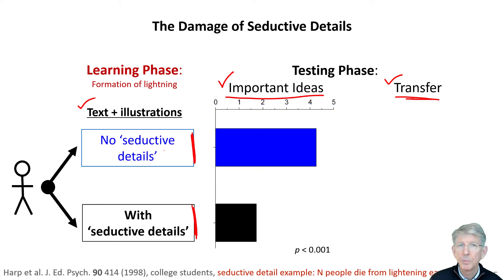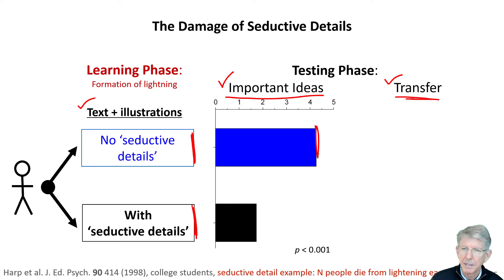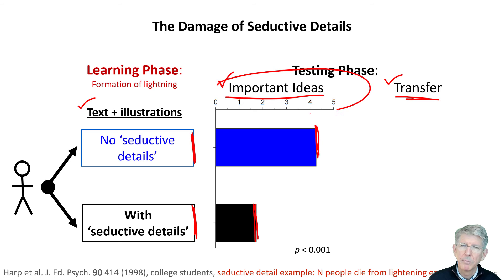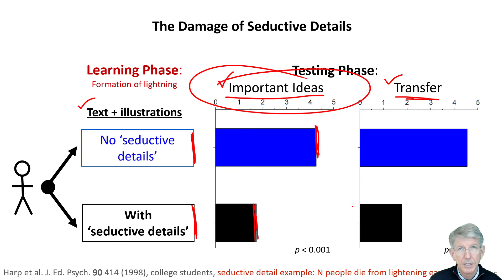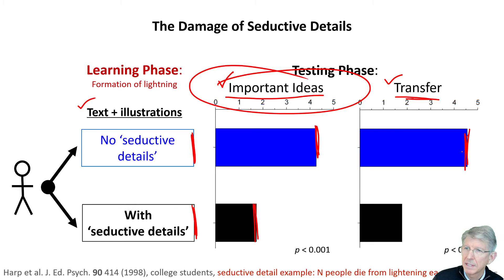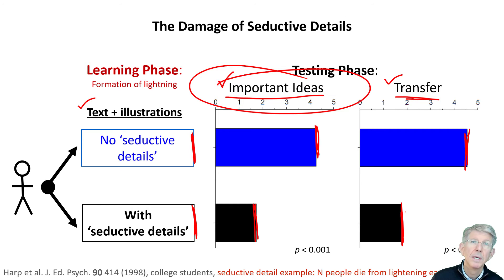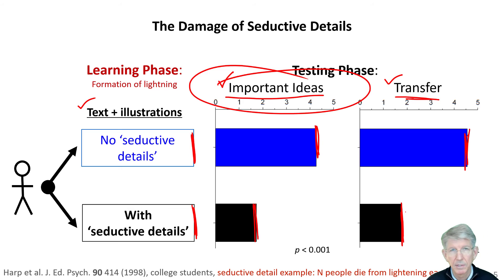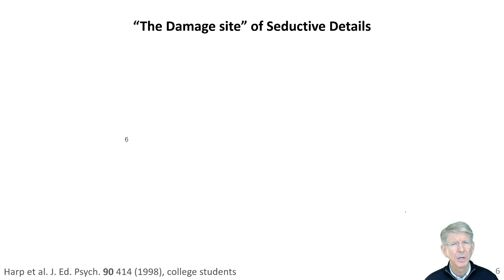The group that did not have any seductive details did distinctly better. Somehow, these seductive details are very much interfering with the learning of important ideas. In addition, when they try to transfer their knowledge to another situation, again the students who did not receive the seductive details did distinctly better compared to those who were subjected to unrelated but interesting or seductive details during the learning process. So how does this damage occur?